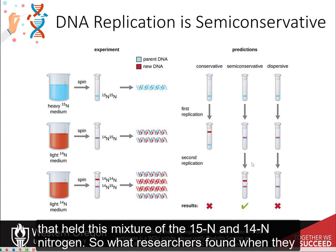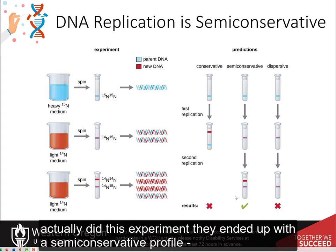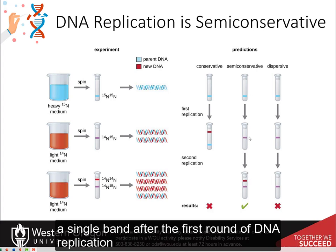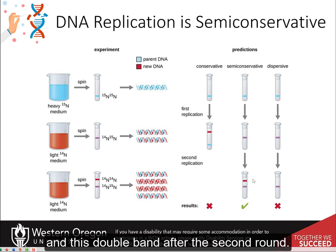When researchers actually did this experiment, they ended up with the semi-conservative profile: a single band after the first round of DNA replication, and a double band after the second round.